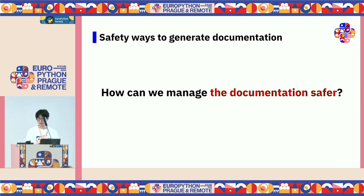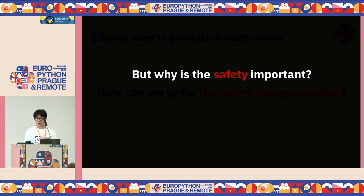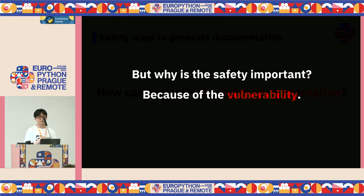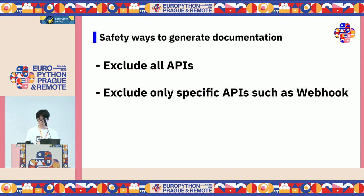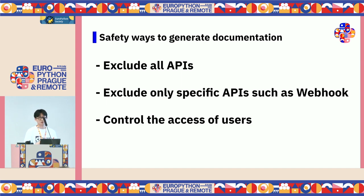Now let's move on to safety. How can we manage our documents much safer? Why is safety important when managing documents? Because of vulnerability — external people can spot the weakness of our APIs or systems through the documents. There are three ways to manage your documents more safely: first, exclude all APIs in the documents; second, exclude only specific APIs such as webhook or health check endpoints; lastly, control the access or permissions of users.